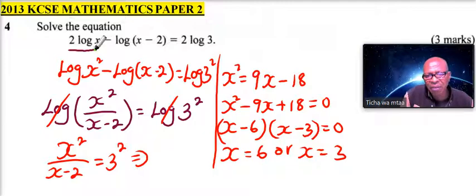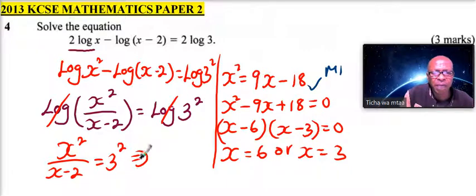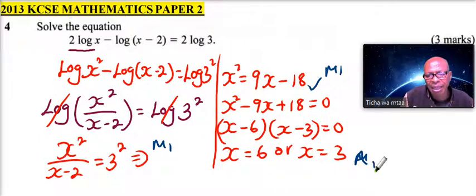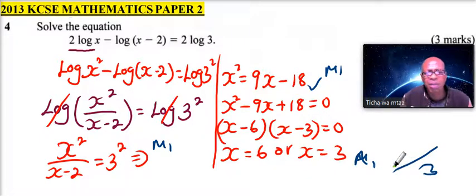And if you substitute x to be 6 here, you will be able to find out they are the same, or if you substitute 3, you will still be able to find that they are the same. If you get to this point, you get a method mark, then when you are able to remove the logarithm, you get another mark, and you get a mark for the answer. So you get a total of 3 marks. That's how you work out logarithms.